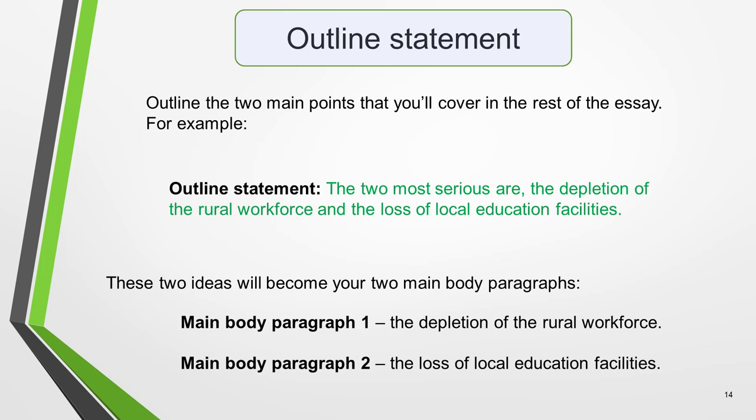Finally, we have the outline statement, in which you outline the two main points that you'll cover in the rest of the essay. This acts as a guide to the examiner as to what you're going to write about, and also helps you to keep focused and on track as you write. Write your outline statement in one sentence, or you can add it on to the end of the thesis sentence if appropriate. Here's an outline statement for our sample question: 'The two most serious are the depletion of the rural workforce and the loss of local education facilities.' These two ideas will become your two main body paragraphs — paragraph 1 about the depletion of the rural workforce, and paragraph 2 about the loss of local education facilities.